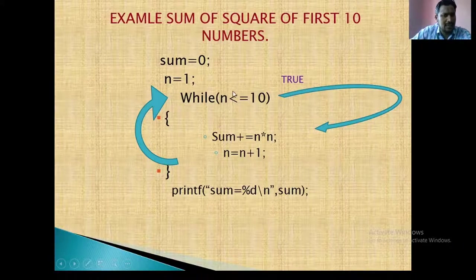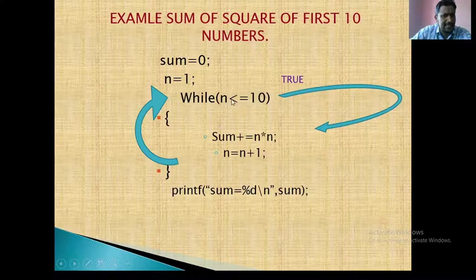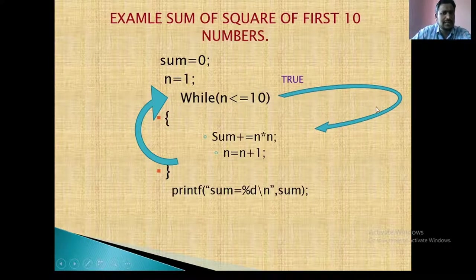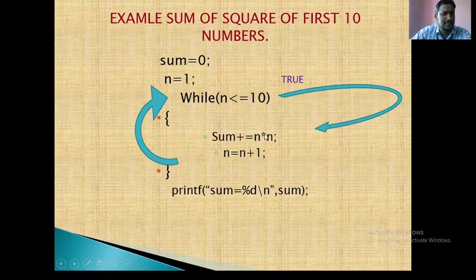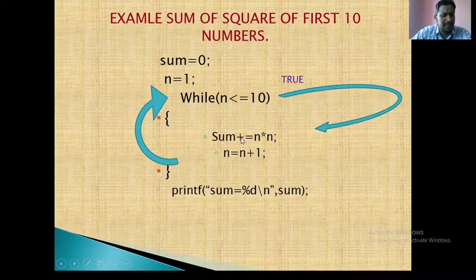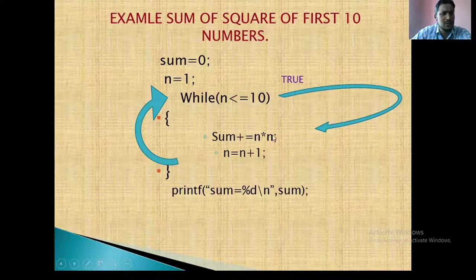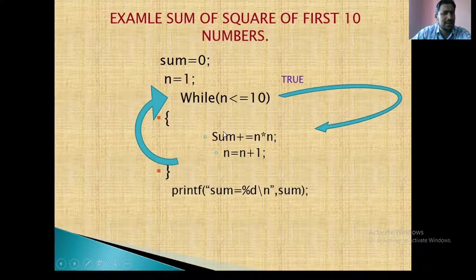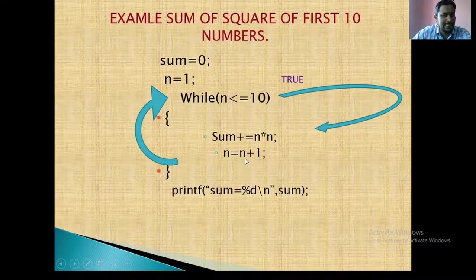So n is here 2. 2 less than or equal to 10. Then again it is checking if it is true or false. If it is true then it is come to sum plus equal to n star n. So sum is already 1. So 1 plus 2 star 2. 2 star 2 is 4. 4 plus 1 is 5. So sum is 5 and n is 3.